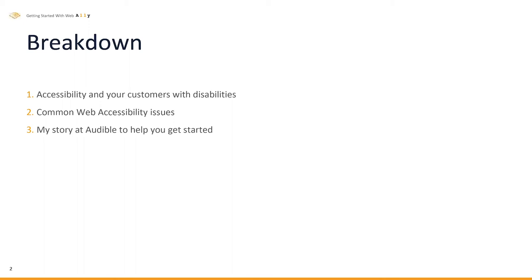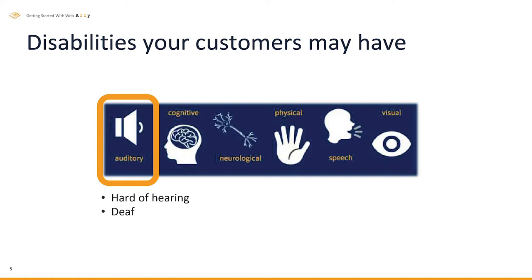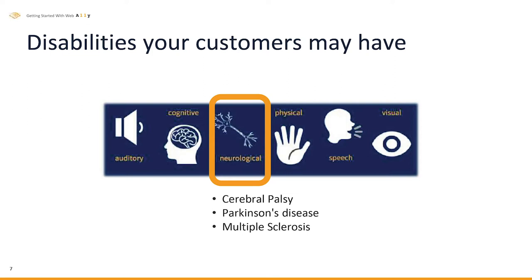Accessibility is a measure of how accessible a computer system is to everyone, including people with disabilities and impairments. Let's take a step back and think about what type of disabilities your customers may have that you may not be aware of. There are auditory disabilities — hard of hearing and deafness. Cognitive disabilities — these could be learning disabilities, anxiety, neurological conditions, cerebral palsy, Parkinson's, MS.